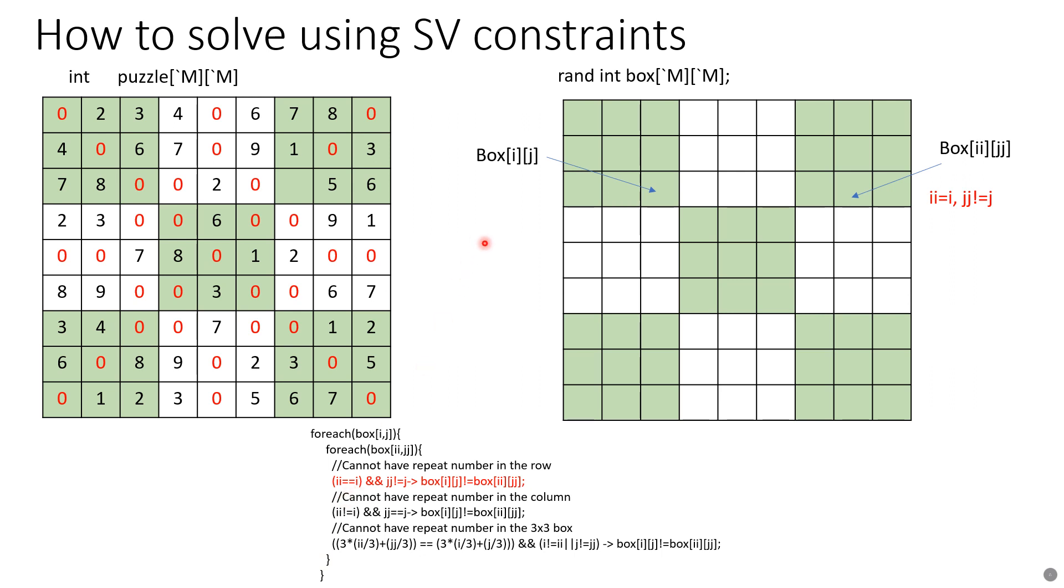Next we need to write constraints for these three rules of the game. There are three rules: no repetition in column, no repetition in row, and no repetition in 3 by 3 grids. So we have to write one constraint each for these rules. Let's go for the first constraint.